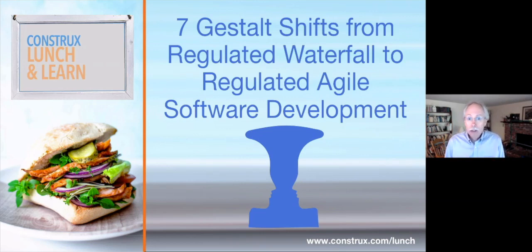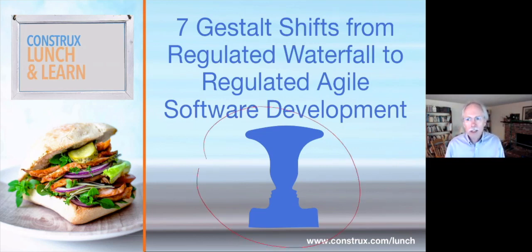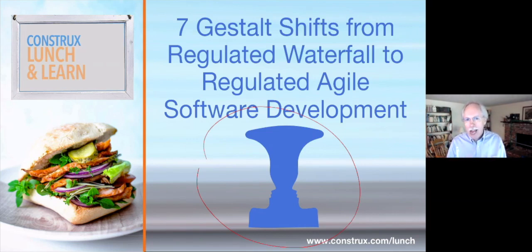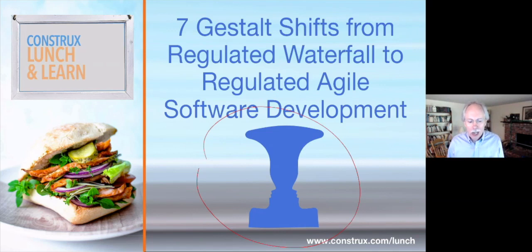I think those take some gestalt shifts. For those who may not be familiar with what a gestalt shift is, it basically looks at the same reality but sees it in a whole different way. An example is the image of a vase — do you see two faces or do you see a vase? You really can't see both at the same time; your mind jumps from one to the other. That's what I'm thinking about as we look at gestalt shifts from regulated waterfall to regulated agile — we're going to see those regulations the same way, the same reality. The question is: can we shift our perception enough to see how to do regulated agile with them?